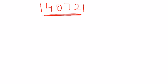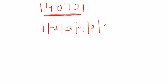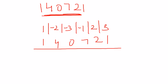What we'll do is write down the pattern I asked you to memorize: 1, -2, -3, -1, 2, and 3. Now write down every digit of the given number below the corresponding digits of the pattern. So 1 just below 1, 4 below -2, 0 below -3, and so on: 7, 2, 1.